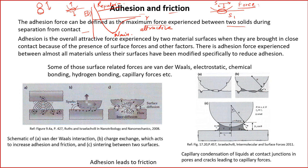The force versus interatomic distance diagram shows a maximum attractive force at some distance, followed by repulsive force at shorter distances. Generally up to about 10 nanometers, the attractive force is very strong. The minimum energy corresponds to the equilibrium position, and the maximum force occurs near that point. This behavior is described by the Lennard-Jones interaction or Lennard-Jones potential.